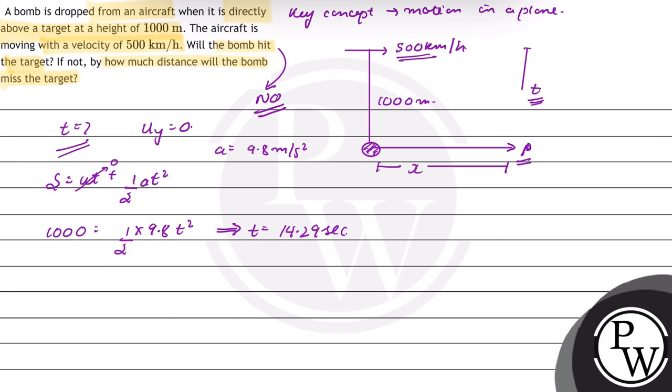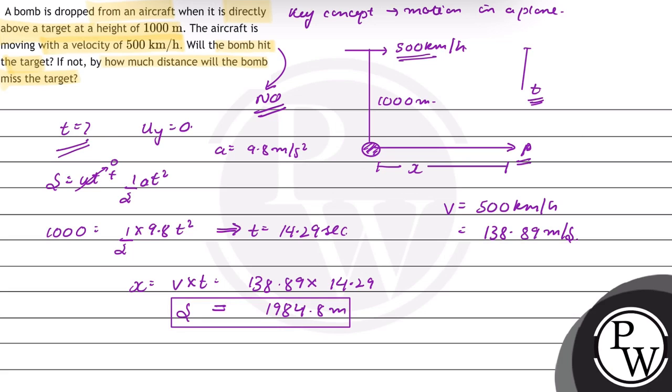Velocity in horizontal direction is given as 500 km per hour or 138.89 meter per second. So, the distance x will be equal to v into t, this will be equal to 138.89 into 14.29, this will be equal to 1984.8 meter. So, the bomb will miss the target by a distance of 1984.8 meter.